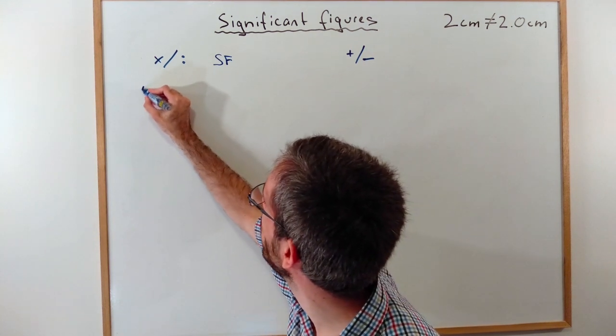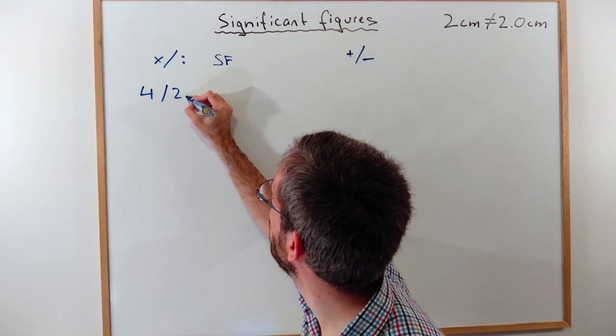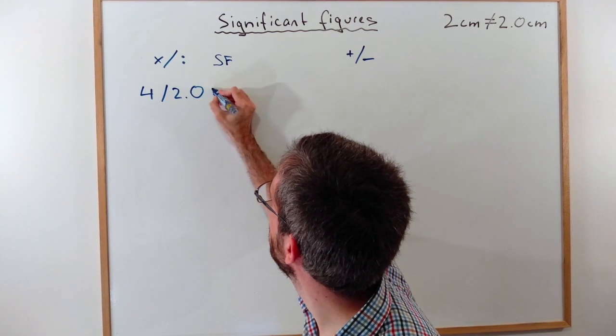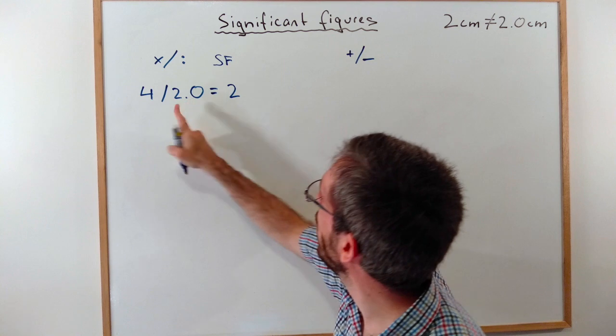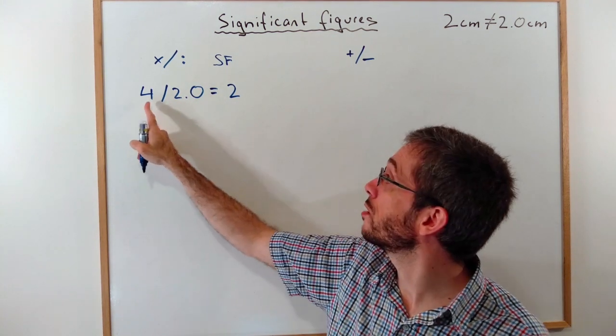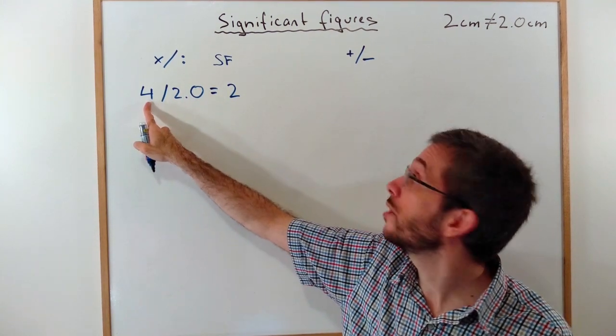if I have 4 divided by 2.0, my answer would be 2. Why? Because the number with the lowest amount of significant figures was the 4. It had 1 significant figure.